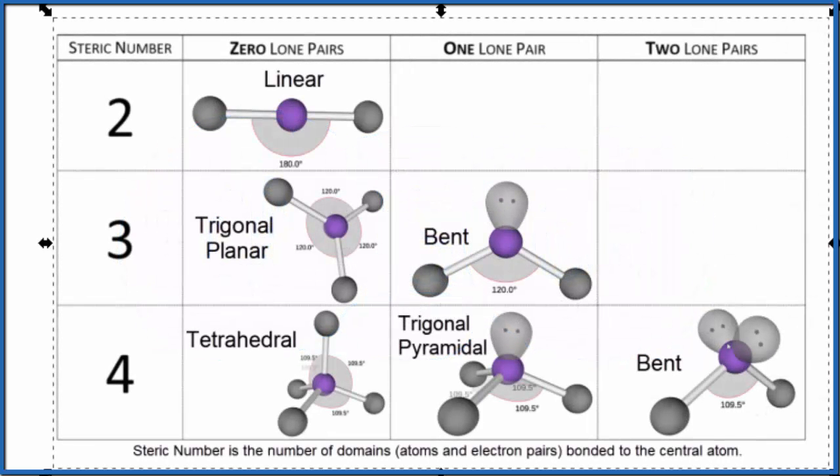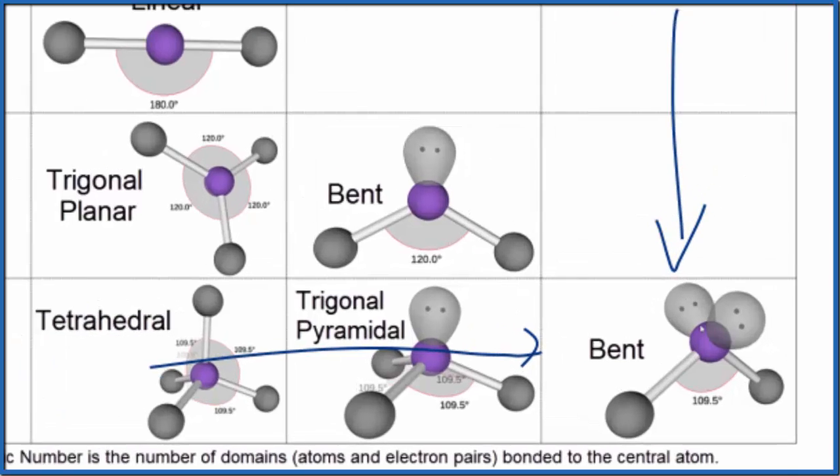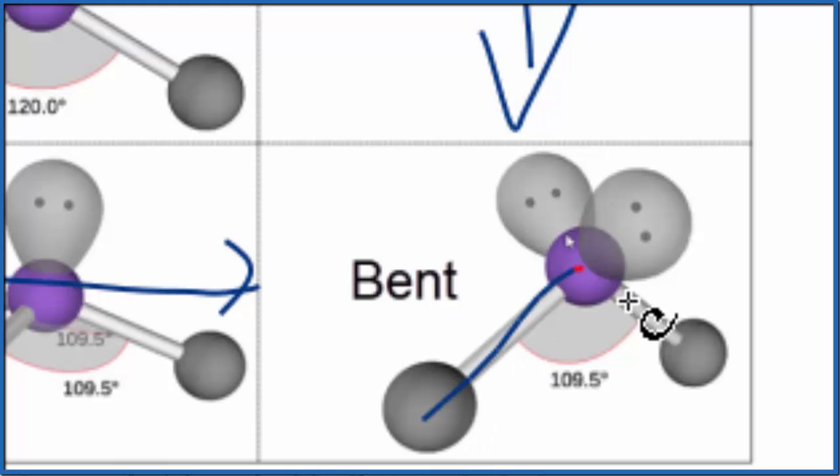So we had two atoms and two lone pairs, so four things. That means our steric number is four. We said two lone pairs. So we'll go over and down, and that's that bent molecular geometry. This bond angle here should be about 109.5 degrees. For SCL2, it turns out to be closer to 103 degrees because of the lone pairs here. We have this bent molecular geometry.